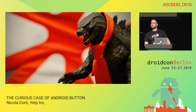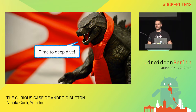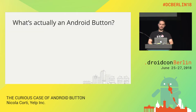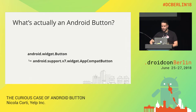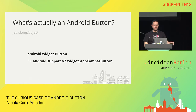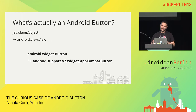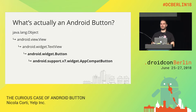Now we've talked a lot about design. Let's deep dive inside the Android framework to see what a button actually is and how it's implemented. What's an Android button? We start with this class: android.widget.Button. If you use the support library, you might also use AppCompatButton. Since they're still written in Java, they're Java objects and custom views — but the important thing is there's another class in the hierarchy: it's actually a TextView. This is one of the most important points: buttons are TextViews, nothing more.